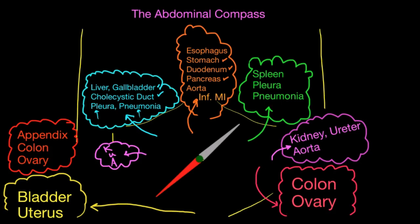The right lower quadrant is similar to the left lower quadrant — colon and ovary — but importantly, it also contains the appendix. An inflamed or ruptured appendix causes appendicitis. Colitis can cause pain here. The same ovarian problems seen on the left — torsion or cyst — can occur on the right side as well, and any of these could be responsible for right lower quadrant pain.